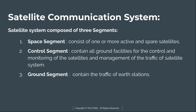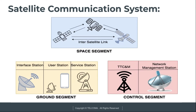This diagram shows the space segment, ground segment, and control segment. The space segment consists of multiple satellites connected through inter-satellite links. The ground segment consists of interface stations, user stations, and service stations. User stations allow customers direct access to the space segment through handsets, mobile stations, and VSAT — very small aperture terminals.